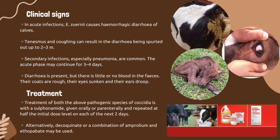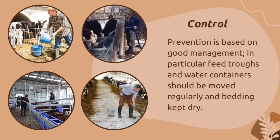Treatment for the most pathogenic species of coccidia is with a sulfonamide given orally or parenterally, repeated at half the initial dose on each of the next two days. Alternatively, decoquinate or a combination of amprolium and ethopabate may be used. Prevention is based on good management — in particular, feed troughs and water containers should be moved regularly and bedding kept dry.